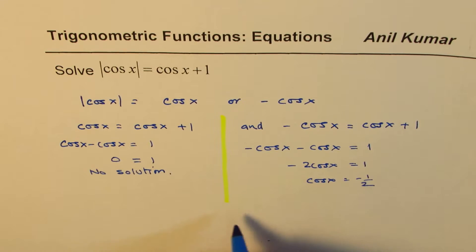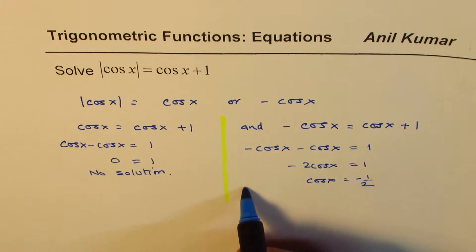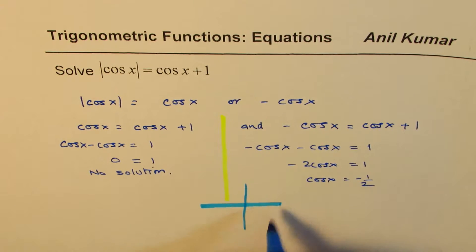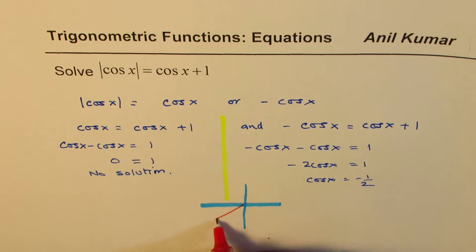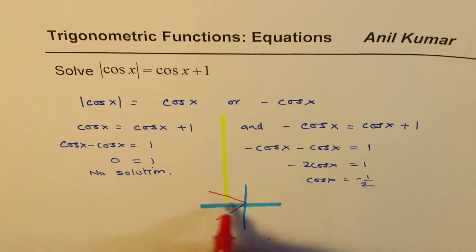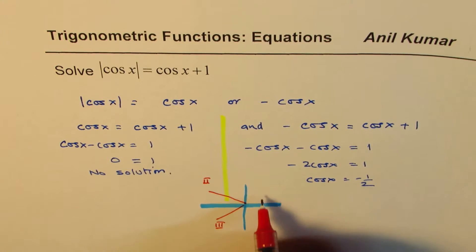Now, what are the possible solutions? Let's look into the coordinate plane. Cos is negative in quadrant 2 and 3. It could be half either in this coordinate or in this coordinate. Quadrant 2 or quadrant 3. You know the rule. Cos is negative in these two.